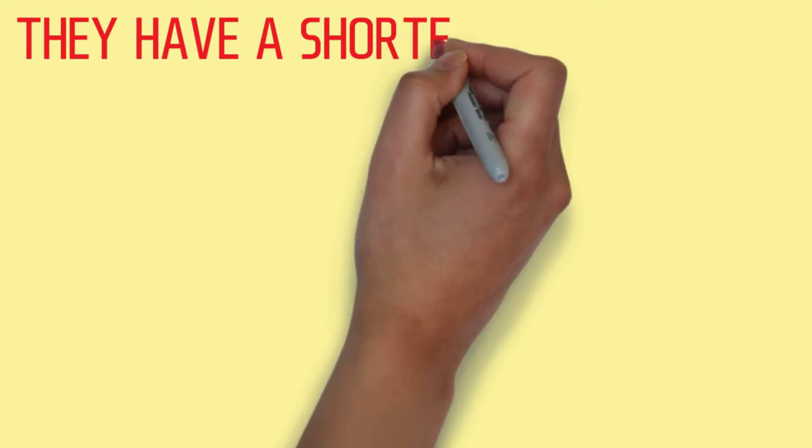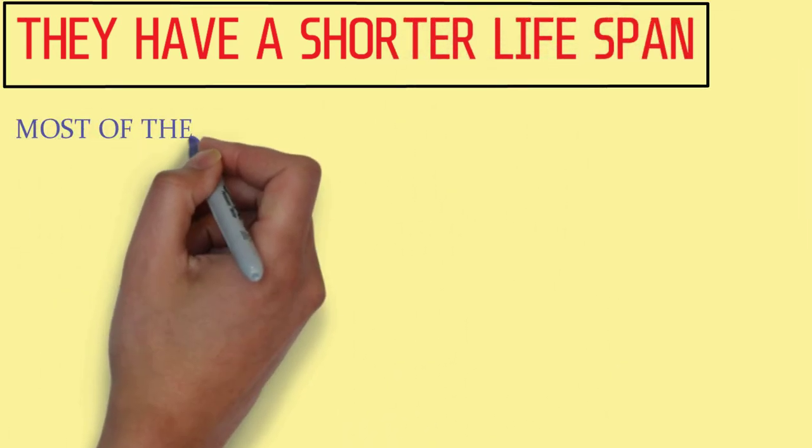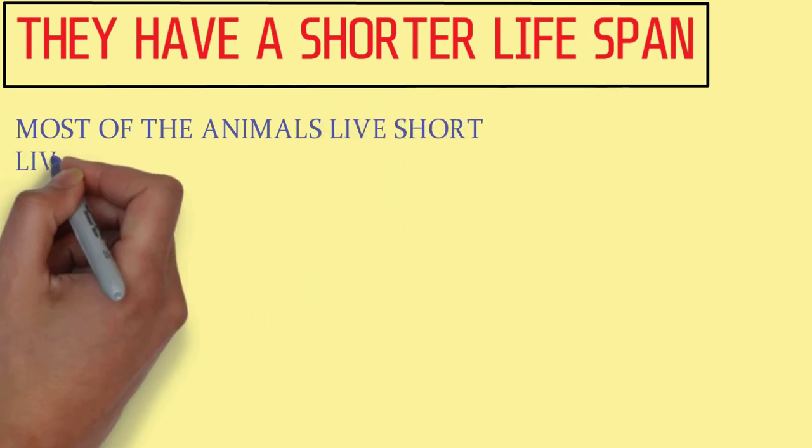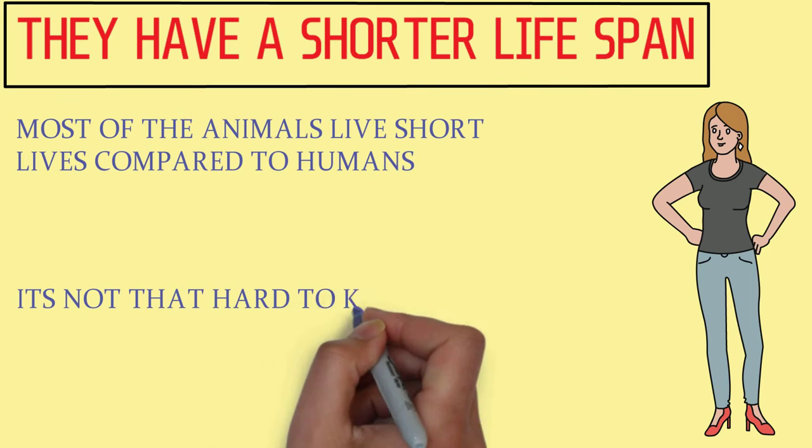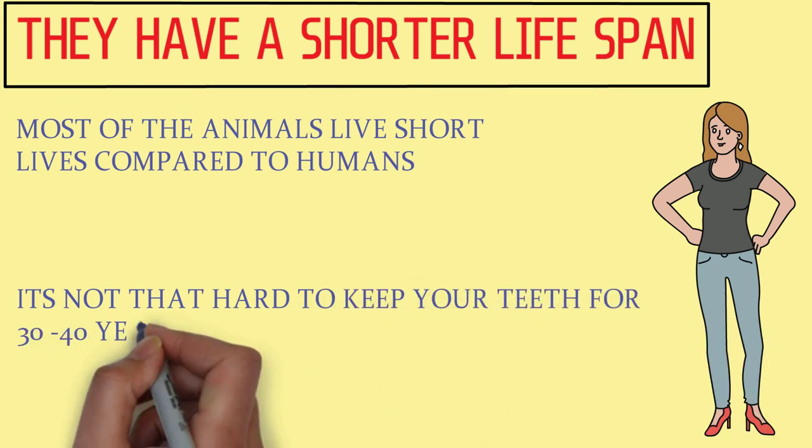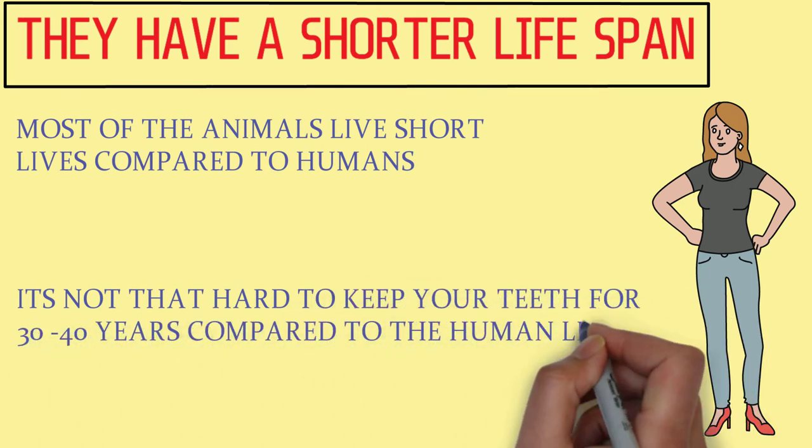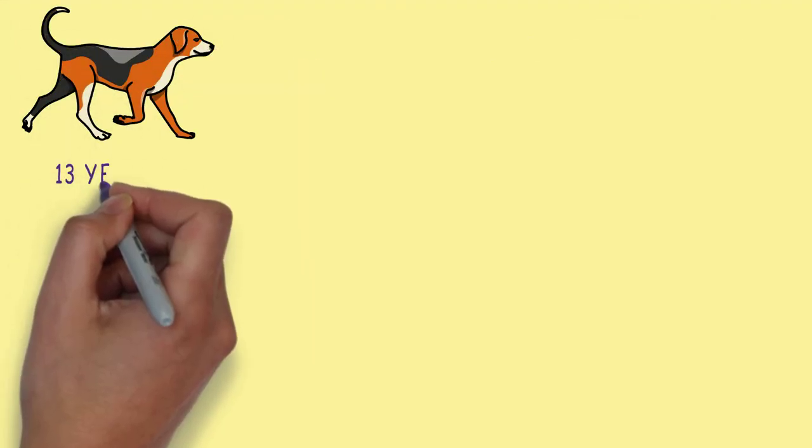Fact 3, animals have a shorter lifespan. Most animals live short lives compared to humans. This also means that their teeth do not need to last as long as ours. It's not that hard to keep your teeth for 30 or 40 years compared to the human lifespan of around 71 years in general.